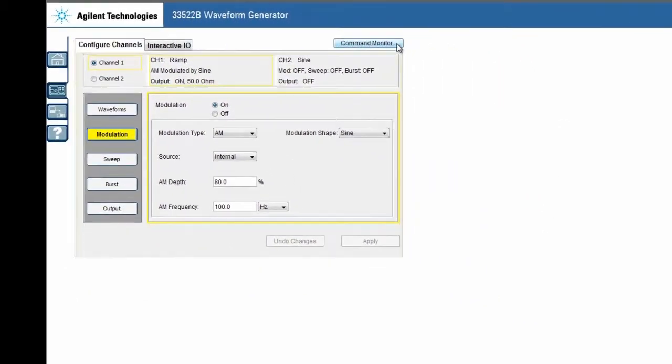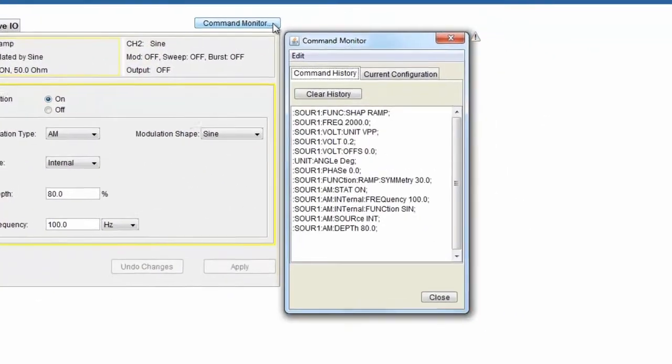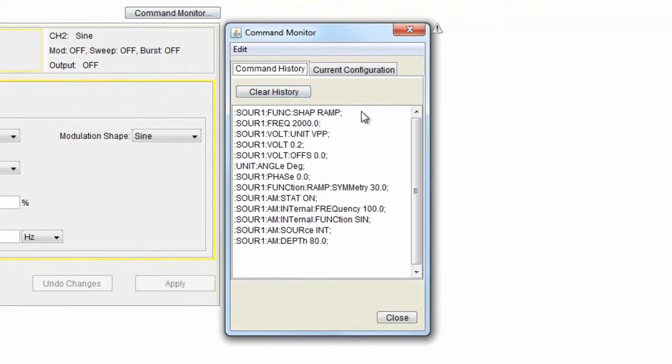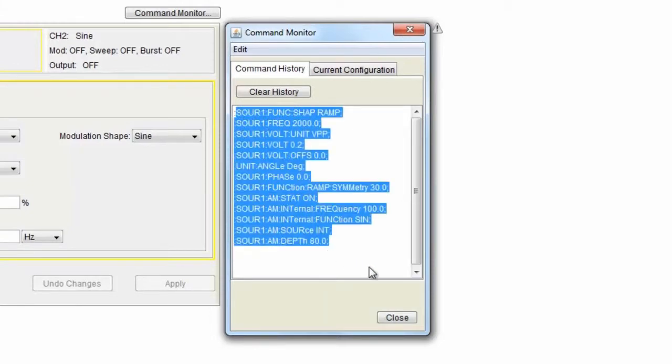One final thing I want to point out is the command monitor. So when I click on command monitor, it comes up with a list in SCPI of all the different commands I've made. SCPI stands for standard commands for programmable instrumentation, and that's what people use when they program these instruments. So you can imagine that you could cut and paste this information here.